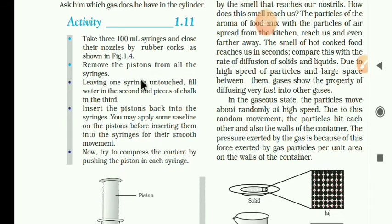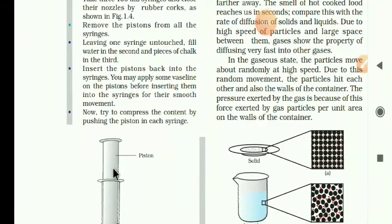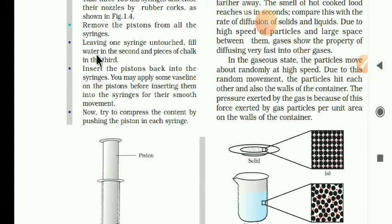Remove the pistons from all the syringes, leaving one syringe untouched. You have three syringes: the first one is left untouched — it is filled with gas. Fill water in the second syringe — that means a liquid. Put chalk pieces in the third syringe — that means a solid. So you are experiencing gas, liquid, and solid.